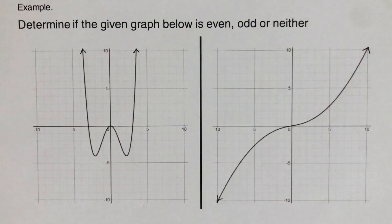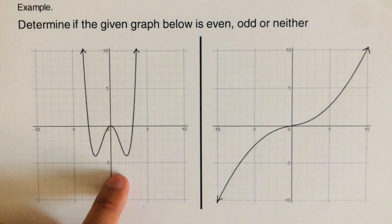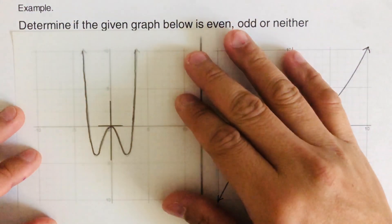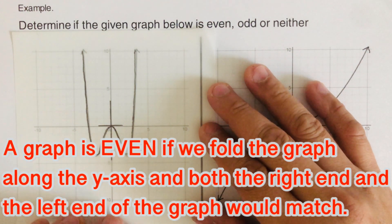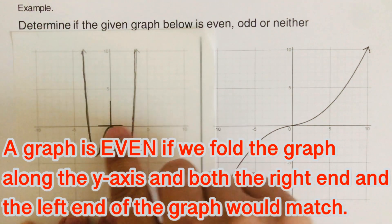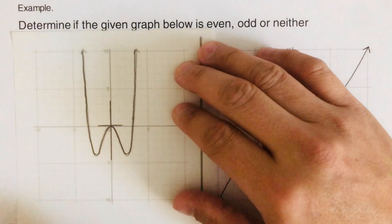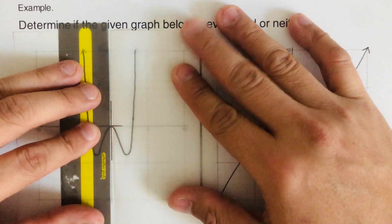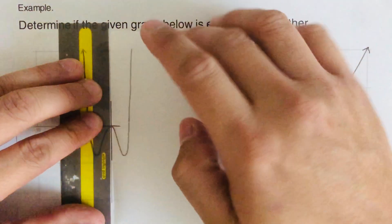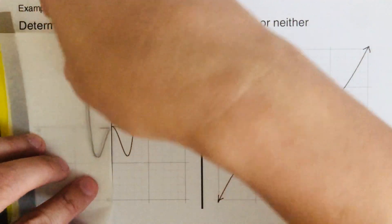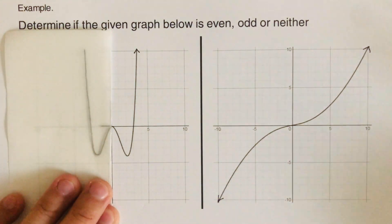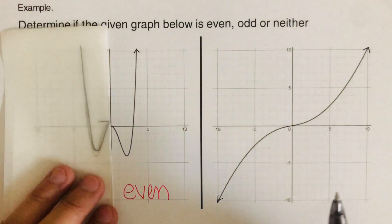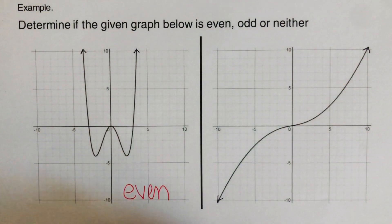Now let's go over this graph and test if it's odd, even, or neither. I have it on the patty paper. To test if it's even, we fold the graph along the y-axis — if both the left end and the right end match up, it's even. We fold along the y-axis and they are a match, so this graph is even.